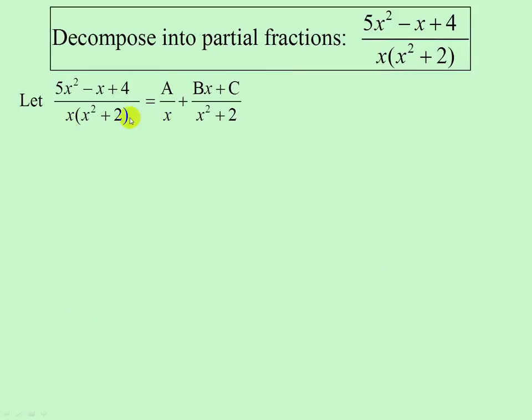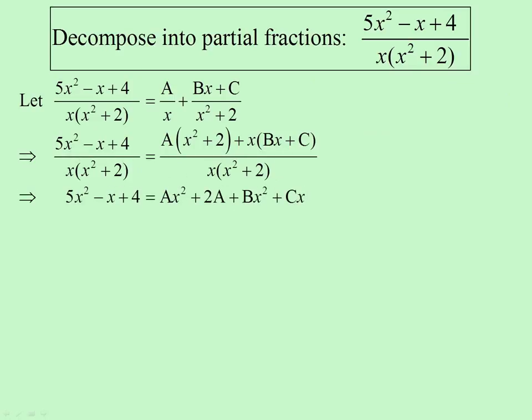A over x, and then x times x squared plus 2, so it must be bx plus c in the numerator. There's our common denominator. Drop the denominator and notice I multiplied it out - this is the first time I've done this at that stage.